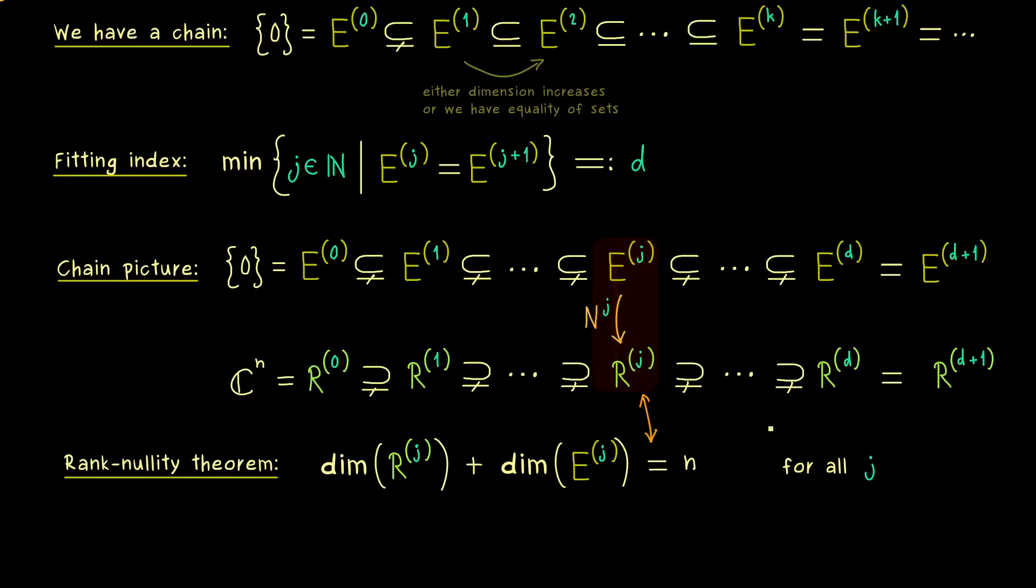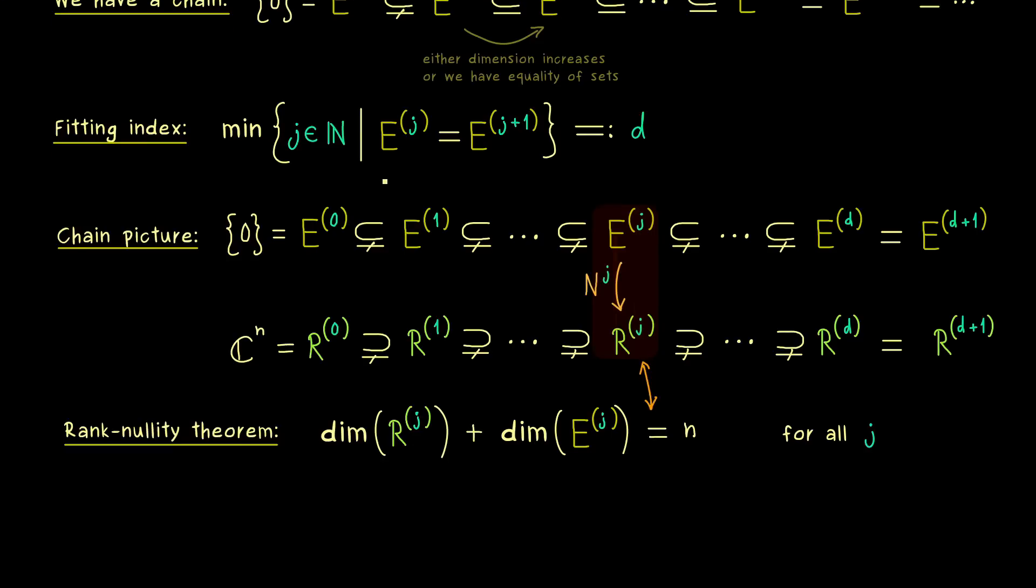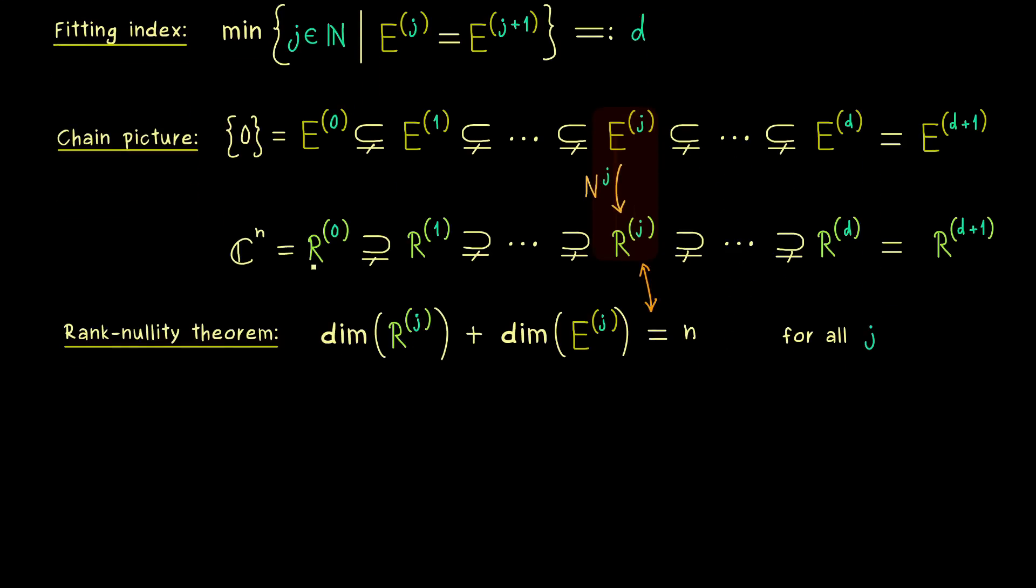So this means we get our first result for the fitting index. Namely, instead of the E-space here we could also choose the R-space. So this is something you can immediately remember: we get the same d out. Now you should see this is really helpful, because the ranges here are easier to deal with when we apply our matrix N to it.